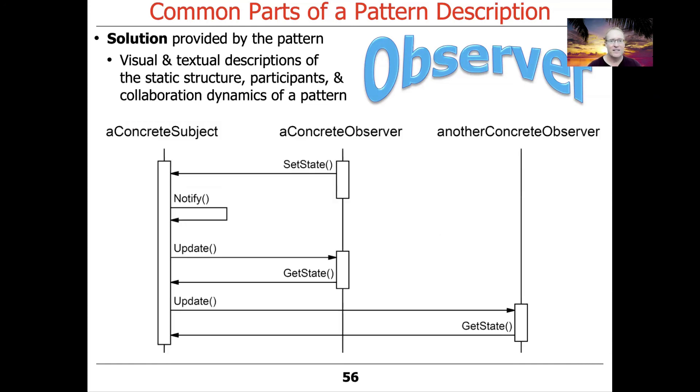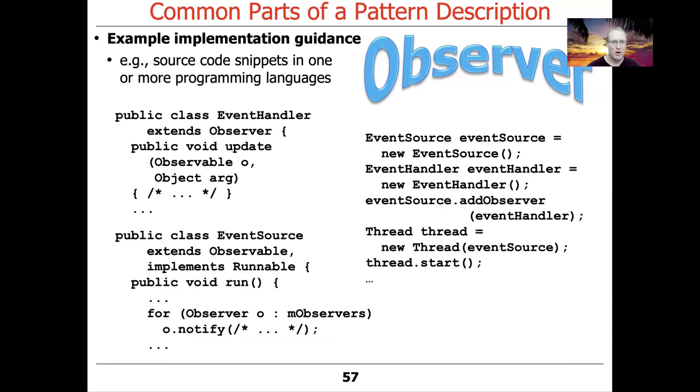There's also often diagrams that show interactions to demonstrate the collaborative dynamics when the program runs. As you can see here, we have a couple of concrete observers that register themselves with the subject, and then when the subject is notified, it updates the various observers and they reach back and grab the state and do their thing. This is just showing you a little snippet of pseudocode in UML interaction diagram form so that you don't get wrapped around the axle of specific details and specific languages with specific data structures.